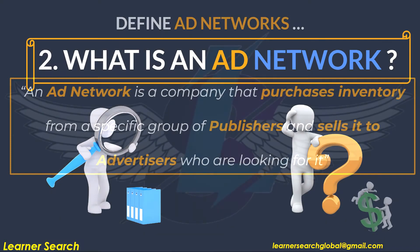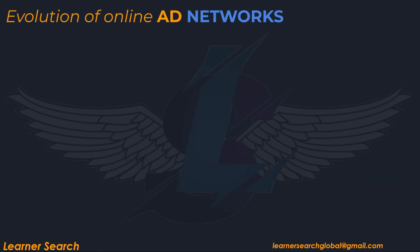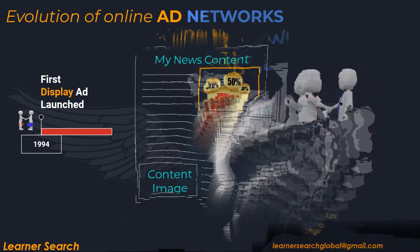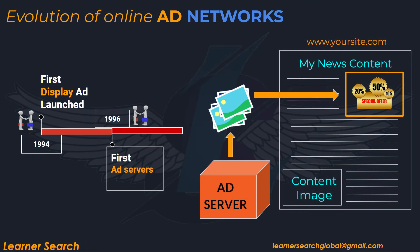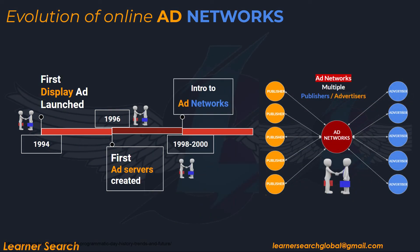What is an ad network? An ad network is a company that purchases inventory from a specific group of publishers, aggregates and marks it up, and sells it to advertisers who are looking for it. Regarding the evolution of online ad networks: during the initial days of the ecosystem, the first display ad was served in 1994. In the year 1996, ad servers were launched. During 1998 to 2000, ad networks came into the picture.